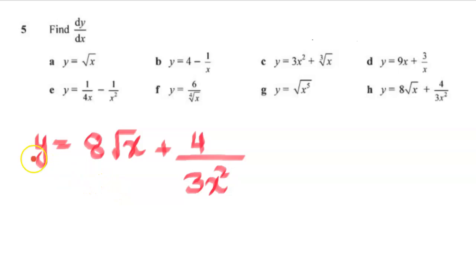Now first thing is, I can rewrite this bit as 8, I'm not differentiating it, 8x to the power half, because square root is actually a half, plus 4 over 3. I cannot bring the 3 up, I can only bring the x up, x to the power minus 2.